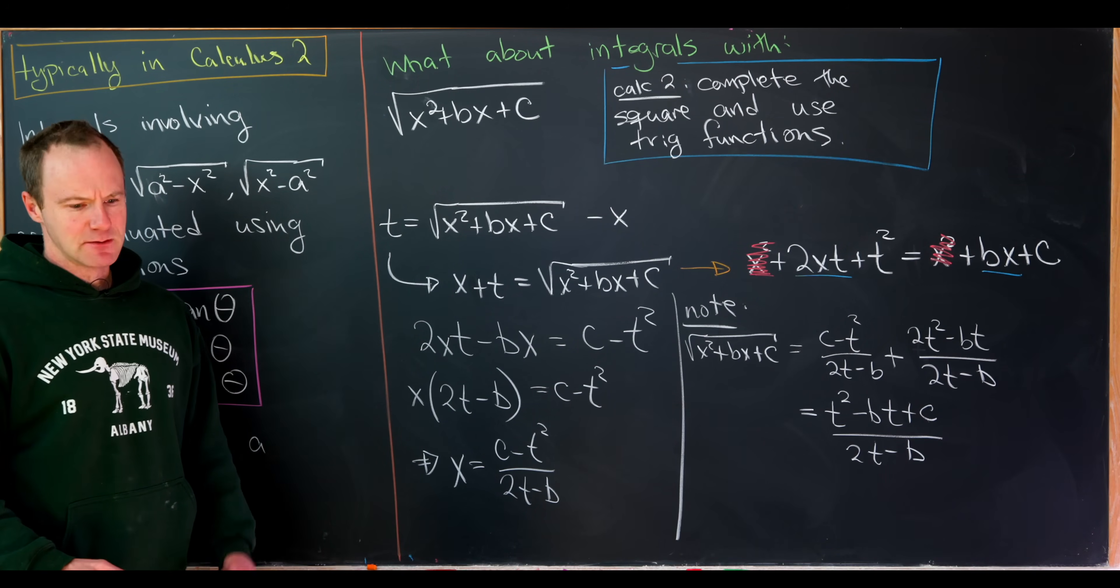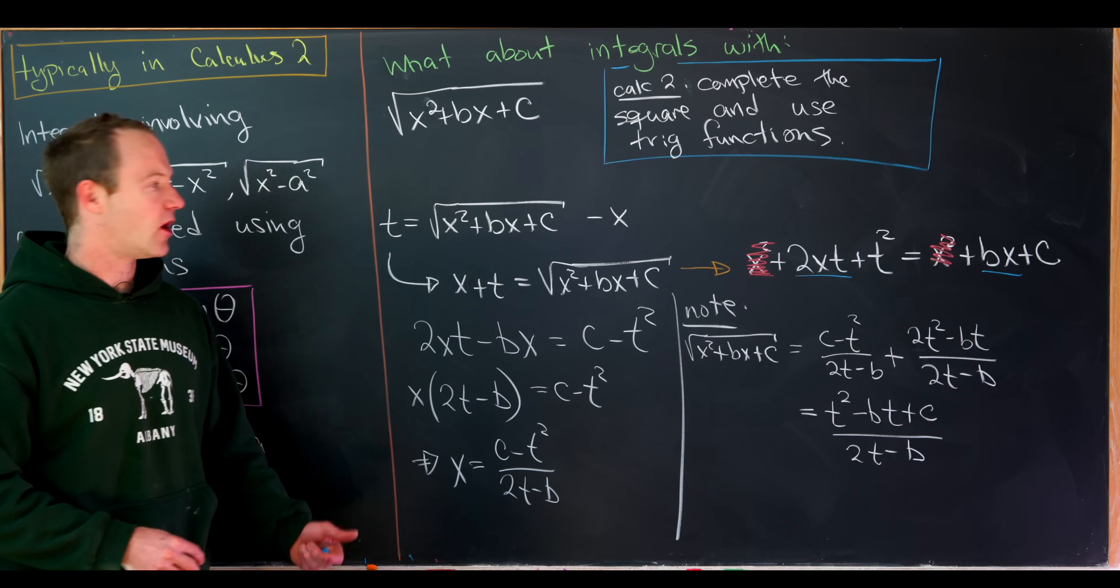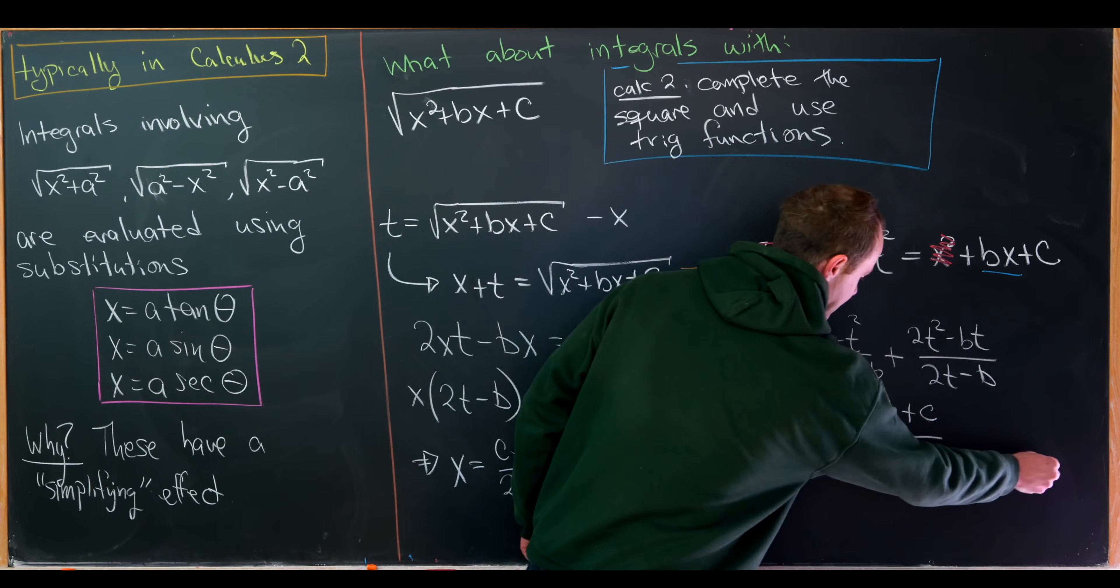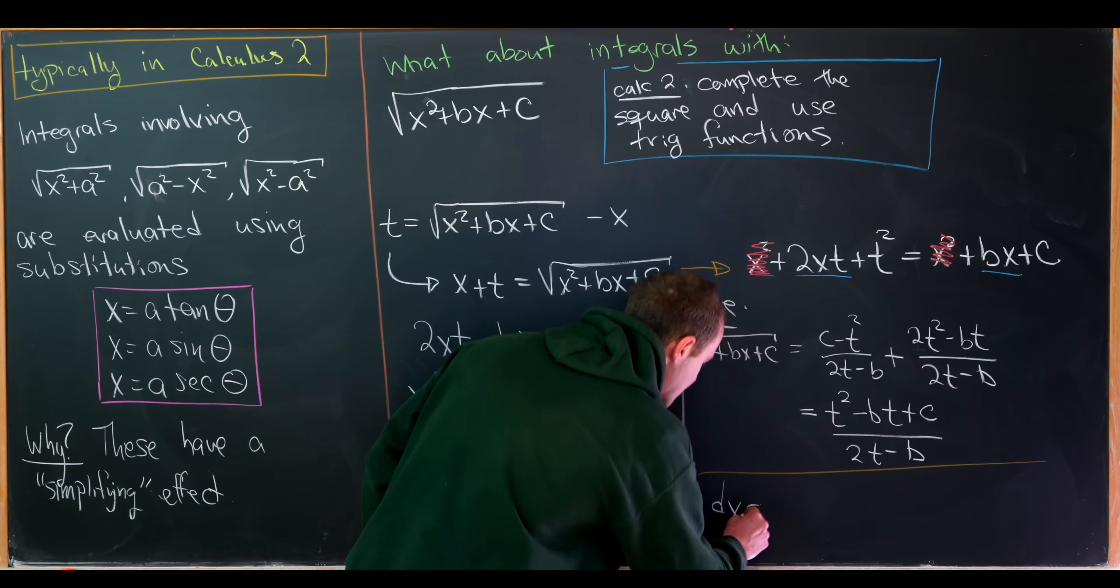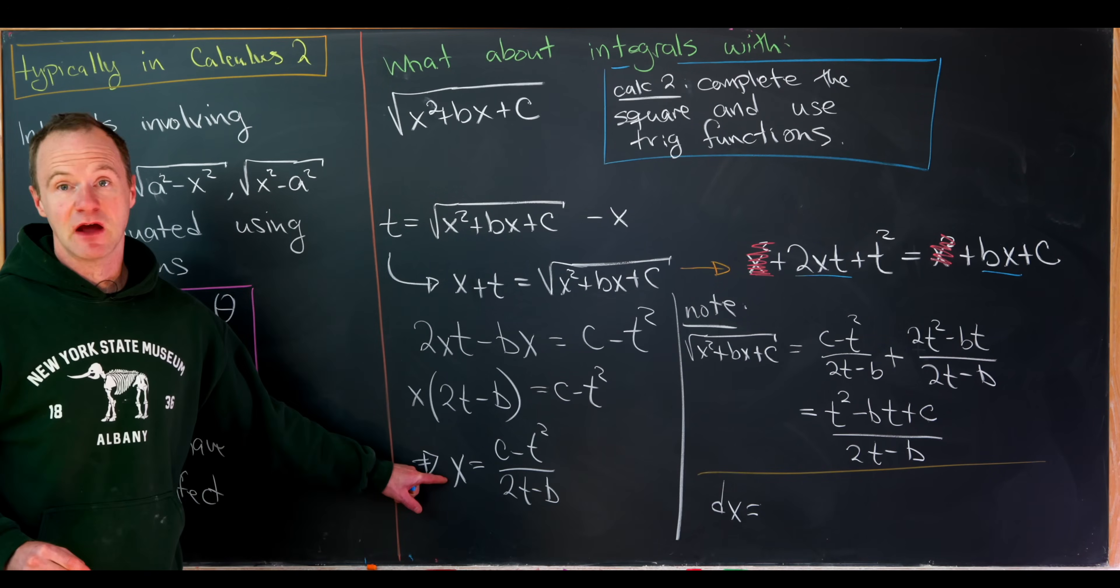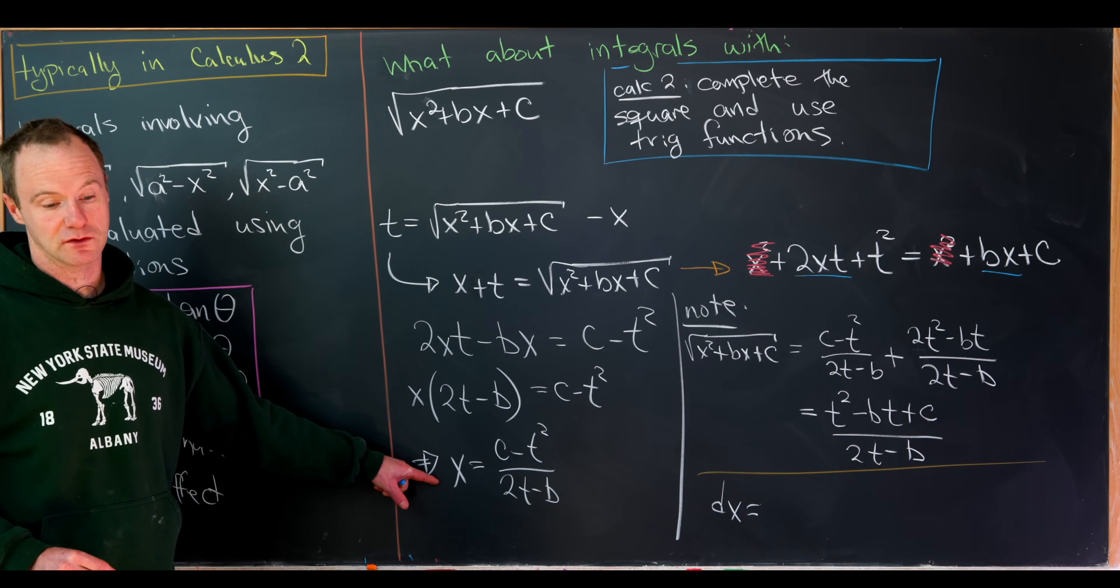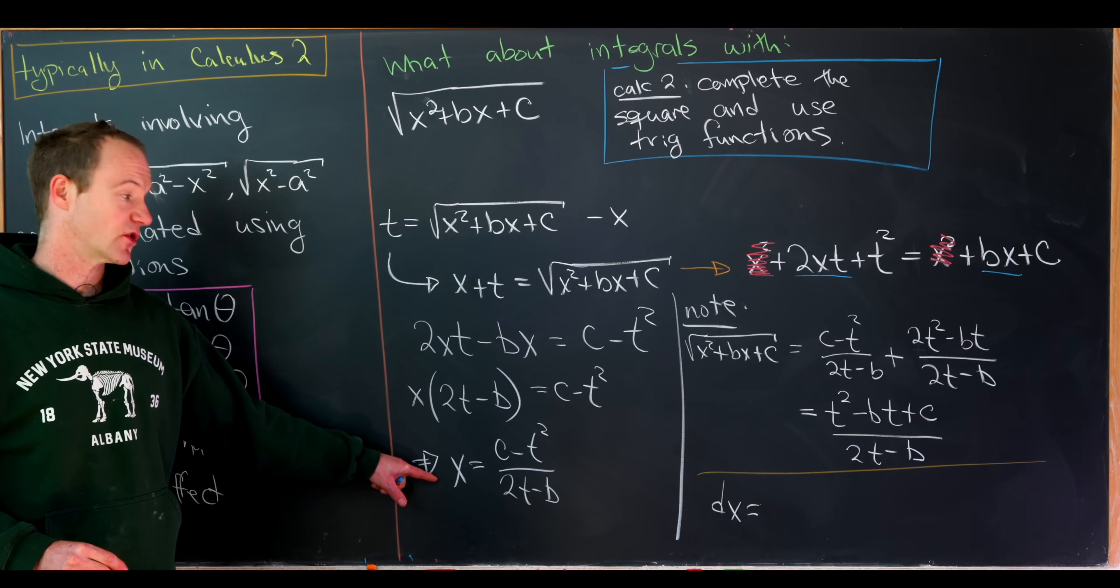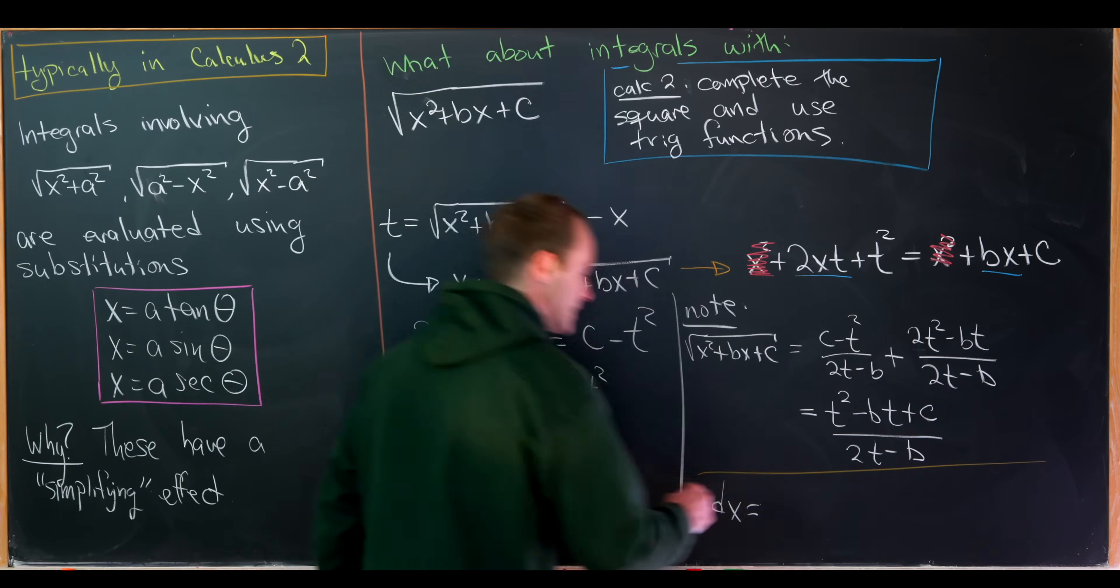Okay, but let's also notice that there will be something involving a dx term, because we're going to do an integral at some point. So we need to calculate dx in terms of dt. And we can do that by taking the derivative of this using the quotient rule. So maybe I'll leave that as a bit of an exercise for you, just because it's fairly straightforward.